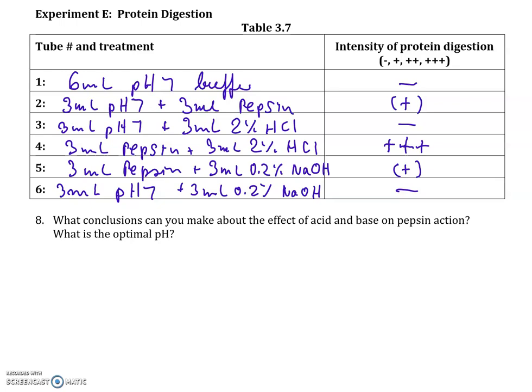Test tube 2 had 3 mL of pH 7 buffer plus 3 mL of pepsin. There is enzyme but the pH is wrong, so you might get a little protein digestion — I put a plus in brackets since from semester to semester we sometimes see a little. Test tube 3 had pH 7 buffer and hydrochloric acid but no enzyme, so no digestion expected. Test tube 4 had pepsin plus 3 mL of 2% HCl — the right conditions — so protein digestion should be very good and the plastic should be completely clear.